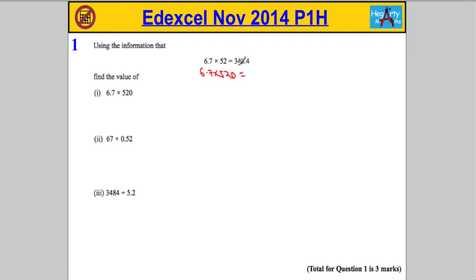If you look, 6.7 times 520 should produce an answer that is 10 times bigger than what we've been shown, and that's because 520 is 10 times bigger than 52. So the answer to this problem should be 3484.